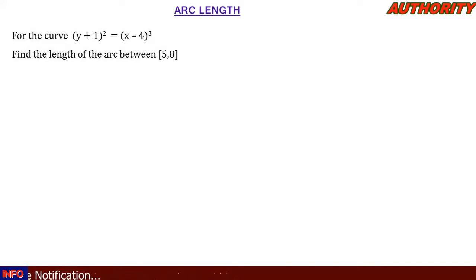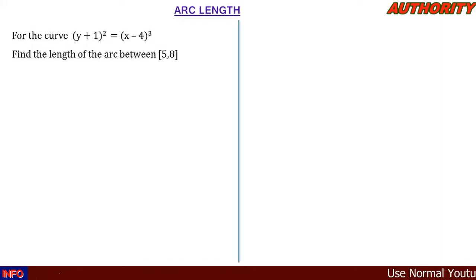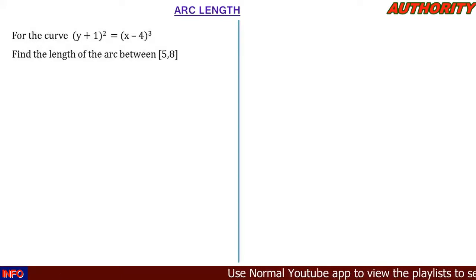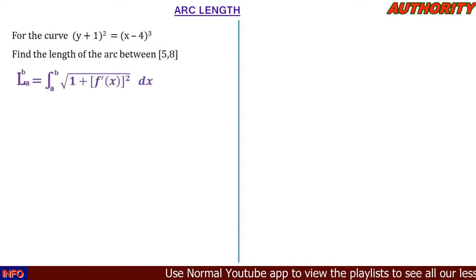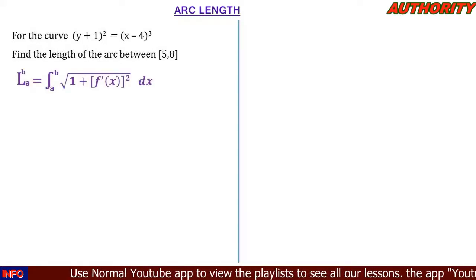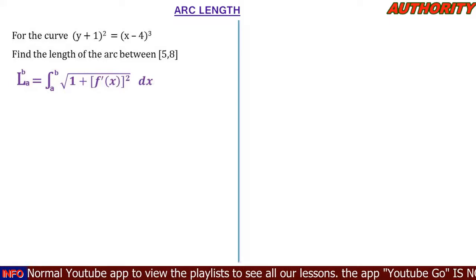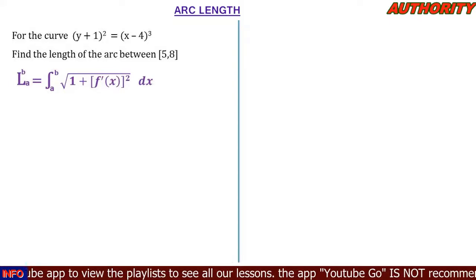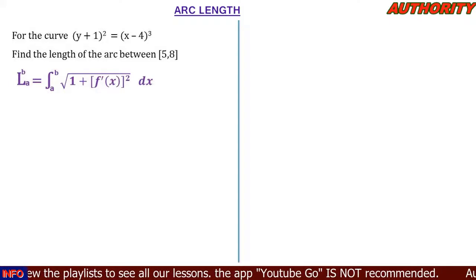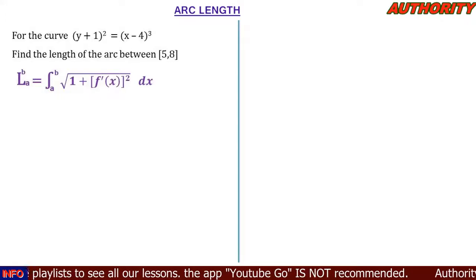We need to find the length of the arc between the interval 5 to 8 of the curve (y+1)² = (x-4)³. The arc length formula is the integral from a to b of the square root of 1 plus [f'(x)]² dx.